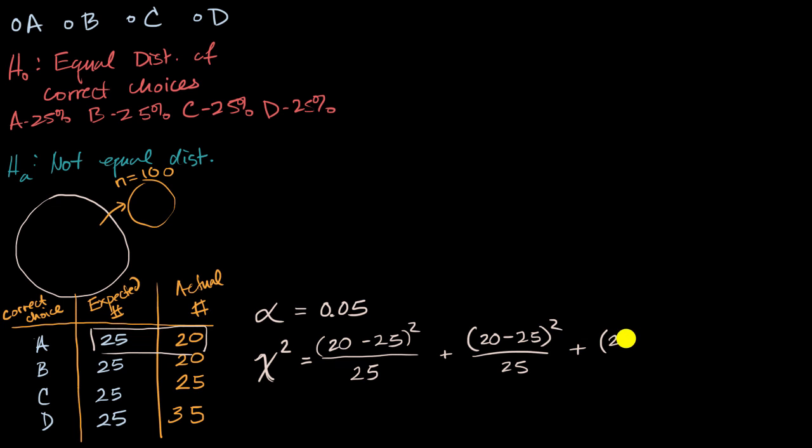Plus, then we do that for choice C, 25 minus 25. We know where that one will end up. Squared over the expected, over 25. And then finally, for choice D, which is going to get us 35 minus 25 squared, all of that over 25. And if we calculate this, this is going to be negative five squared, so that's going to be 25. This is going to be 25. This is going to be zero. 35 minus 25 is 10 squared, that is 100. So this is one plus one plus zero plus four. So our chi-squared statistic in this example came out nice and clean at six.